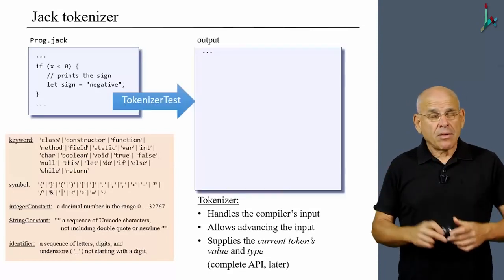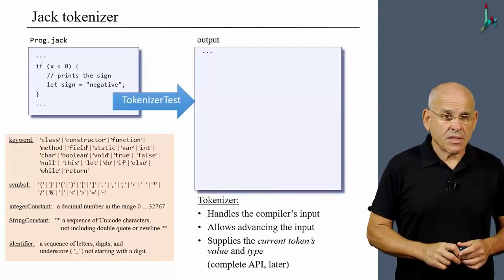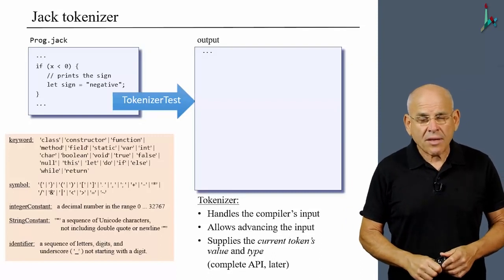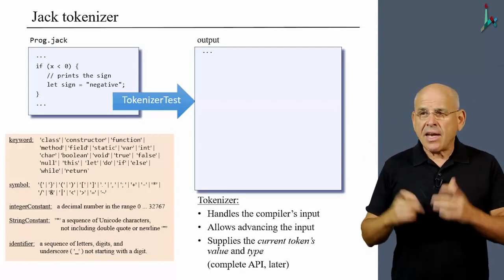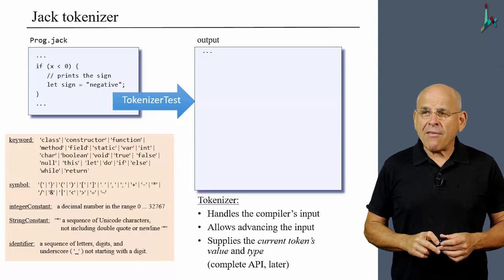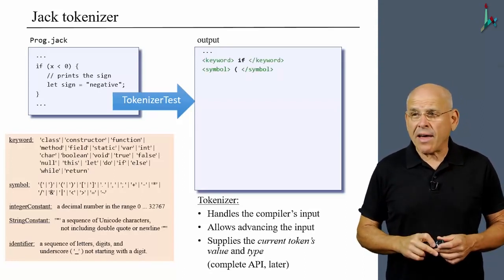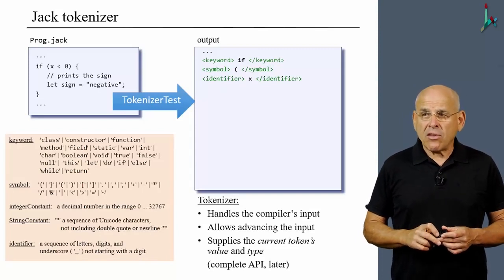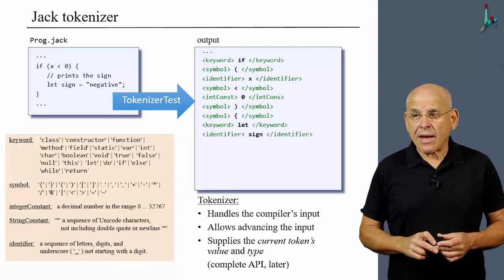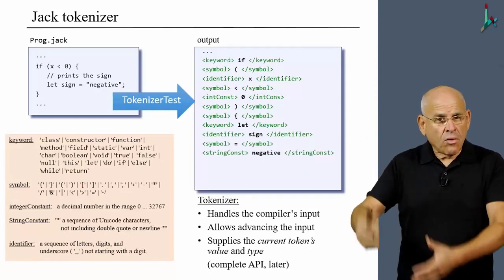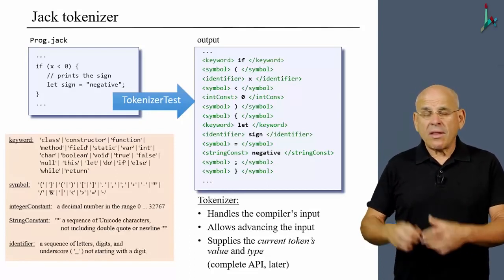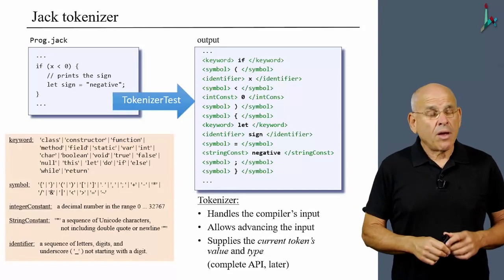So the tokenizer provides all these nice services. And here's an example of a program that uses these services. TokenizerTest is a program that constructs a tokenizer object, and then it goes on to process the input file. And here is what it does. It goes through the input, and for every token it lists the token to the output file and surrounds the token by two tags that describe the type of this token, given the Jack grammar in the Jack language. And so it does it all the way until the end of the file. And what we get is a very useful documentation of not only the tokens that we have in the program, but also the token types.